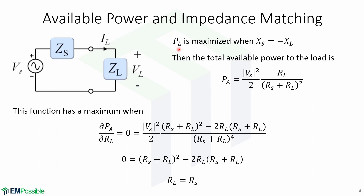The RMS power Pl is maximized when the reactance of the source and the reactance of the load get cancelled. So the total available power to the load is given by this expression.